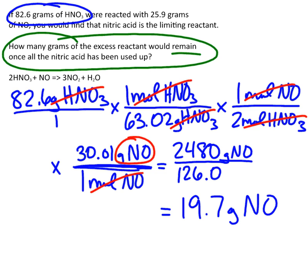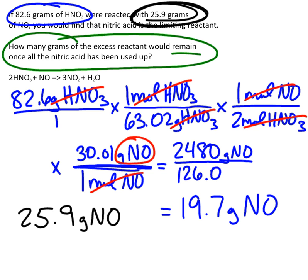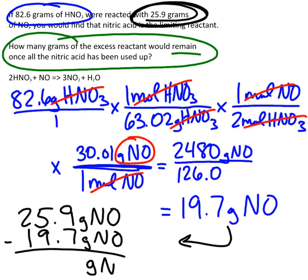So, all I'm going to do is take my original amount of NO, which is 25.9 grams of NO. That's how much I'm starting with. And then I'm going to subtract this amount, 19.7 grams of NO.